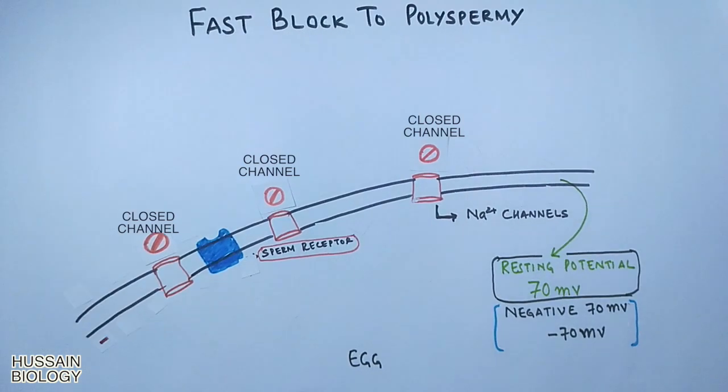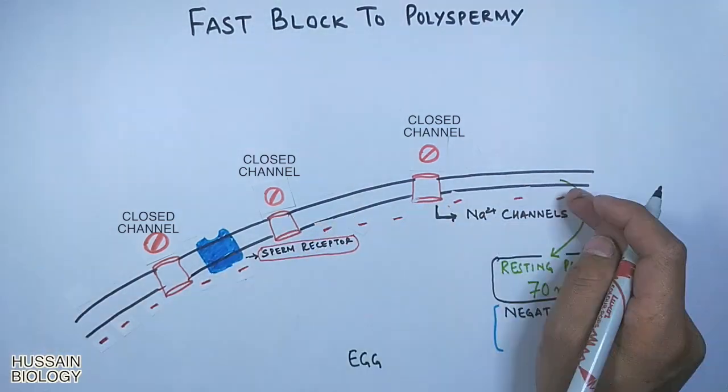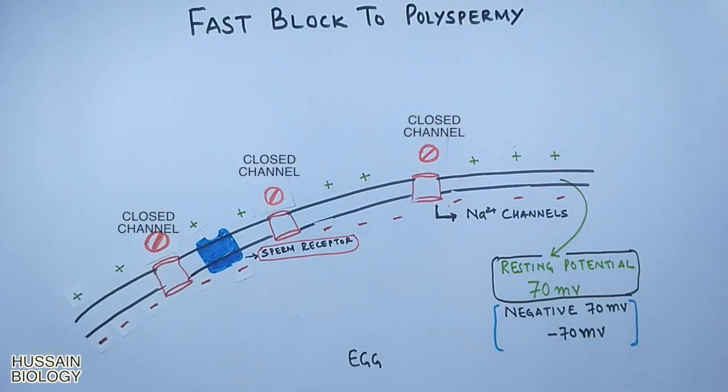If we see it diagrammatically, the inner side of the egg has a negative charge, while the outside of the cell has a positive charge.